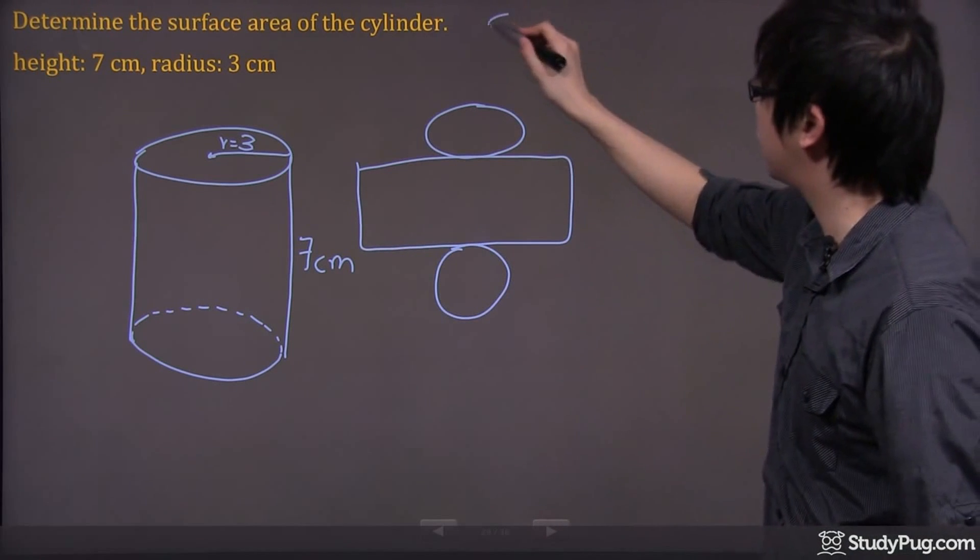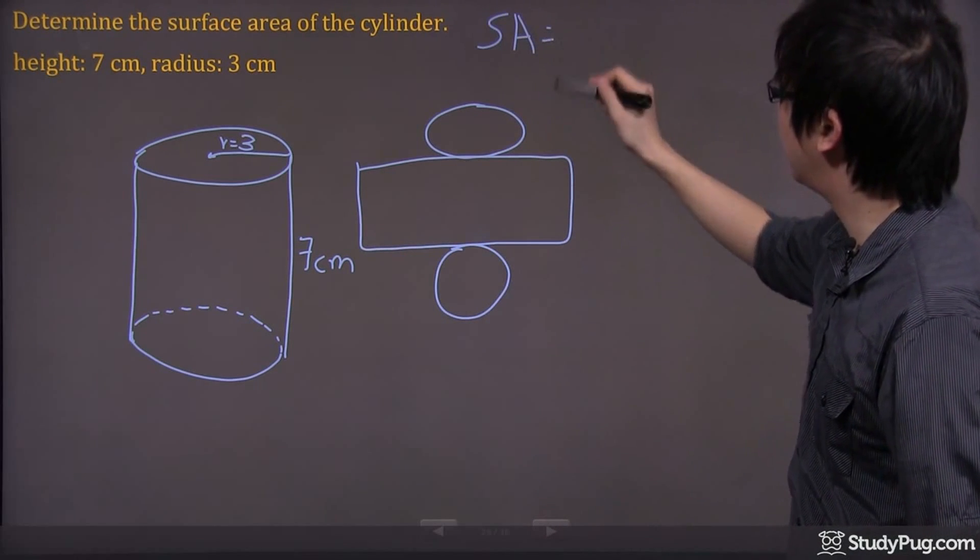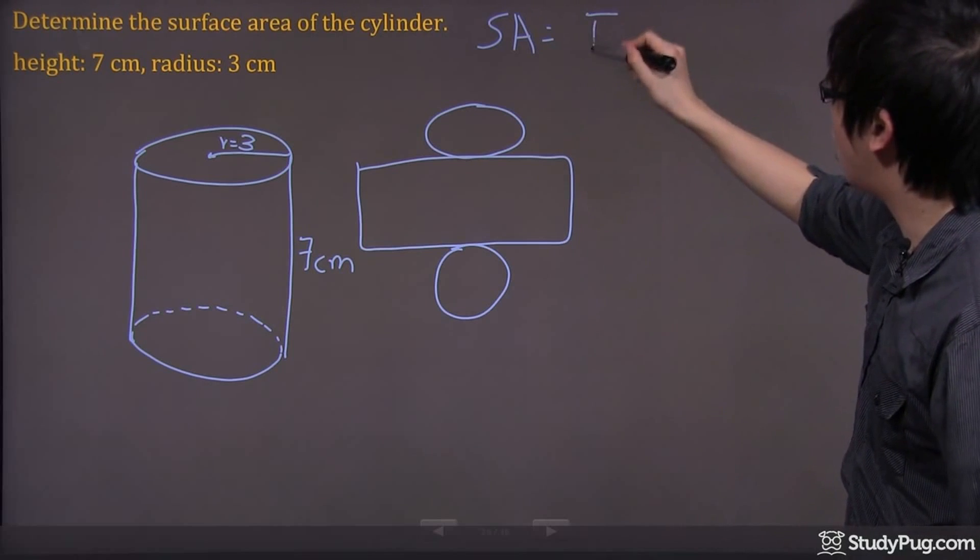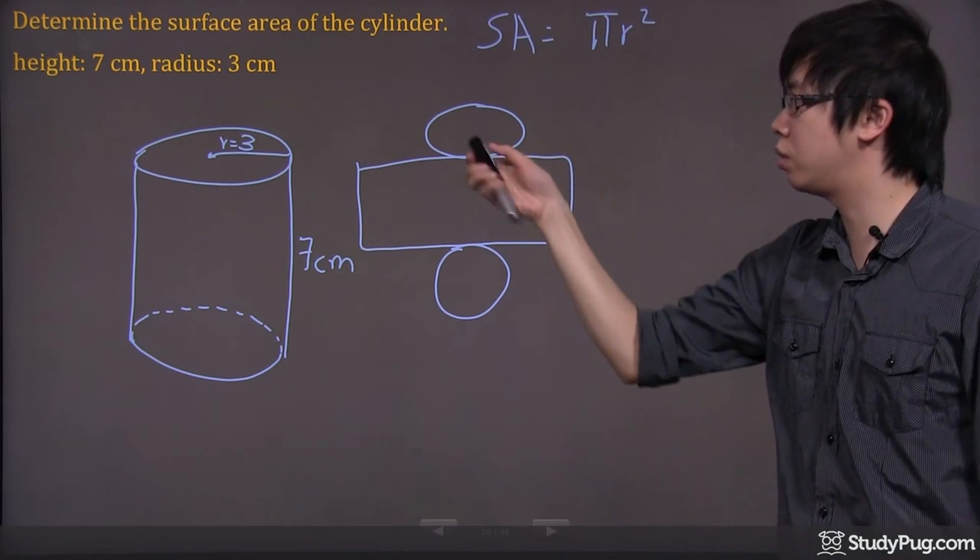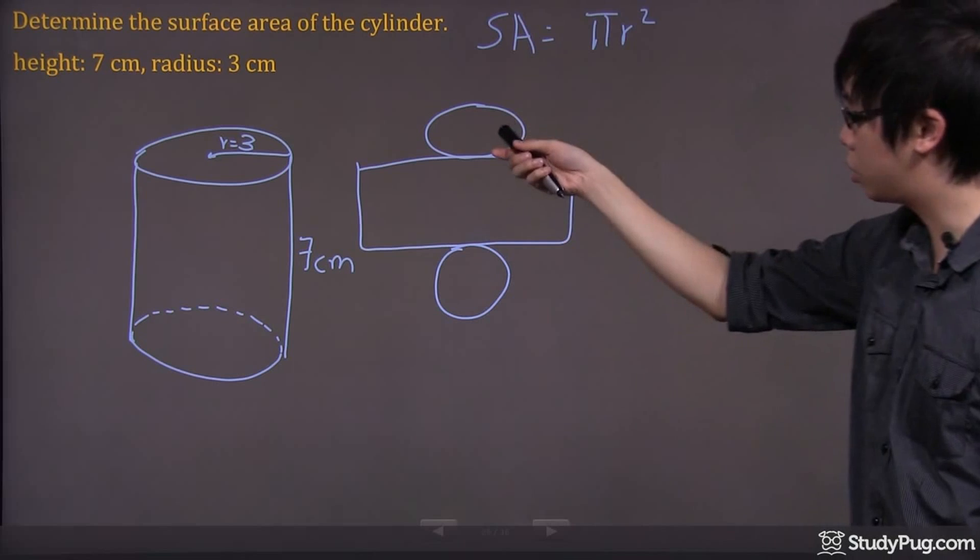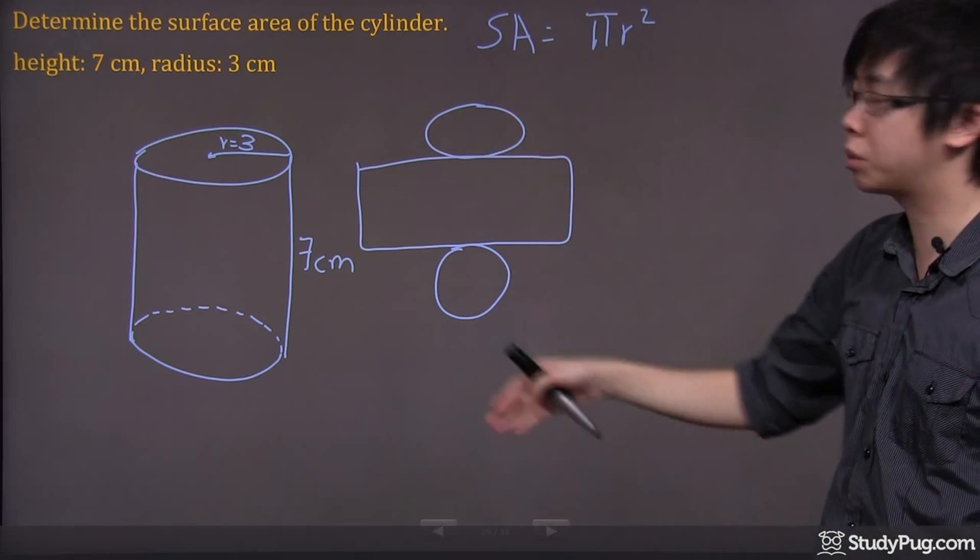The equation for the surface area for your cylinder is pi r squared. This part here refers to the area of the circles, this one right here, but we have two identical circles here.